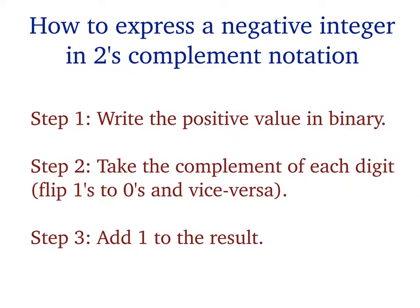To express a negative number in two's complement, we follow three steps. Positive values work just the same as always. For negative numbers: first, write the positive value in binary — drop the sign and write the magnitude. Second, take the complement, meaning flip all the ones and zeros. Third, add one to that result. After that addition, you have your negative number represented in two's complement notation.